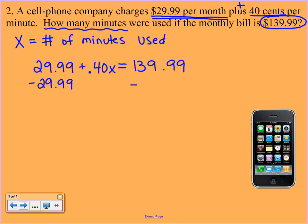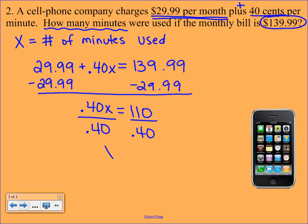We're going to subtract $29.99 from each side. You bring down the 0.40x and that gives us 110. And then we're going to divide both sides by the 40 cents. Using our calculators if necessary we find out that we have 275.